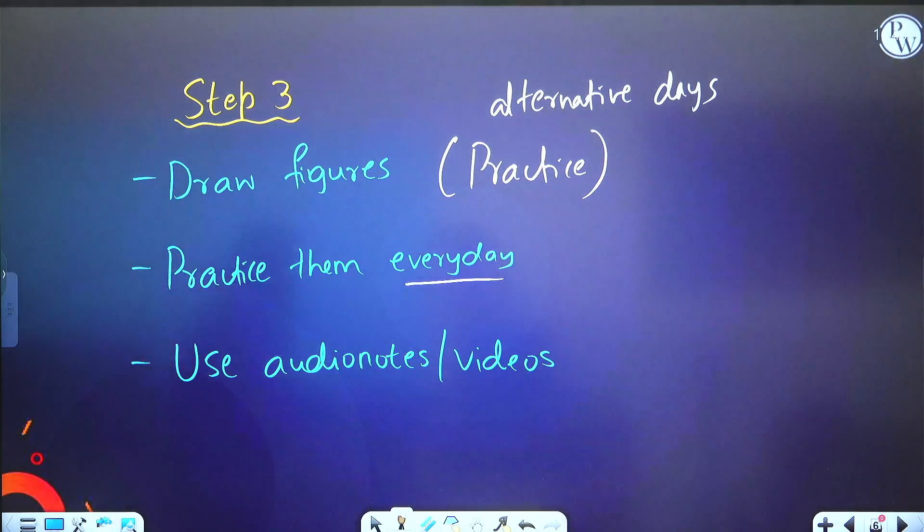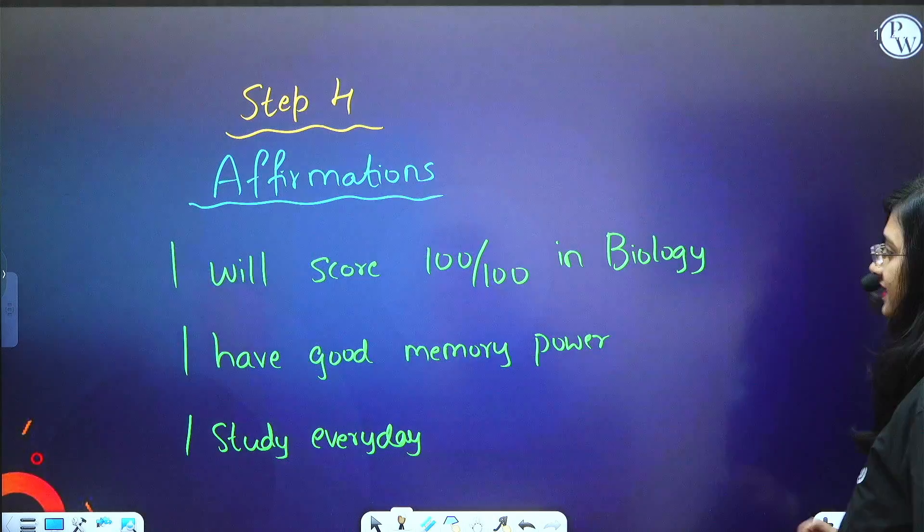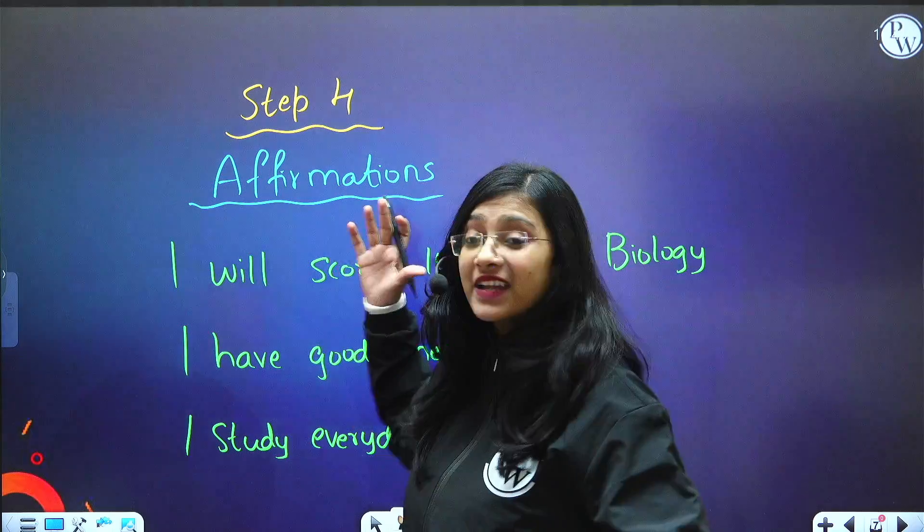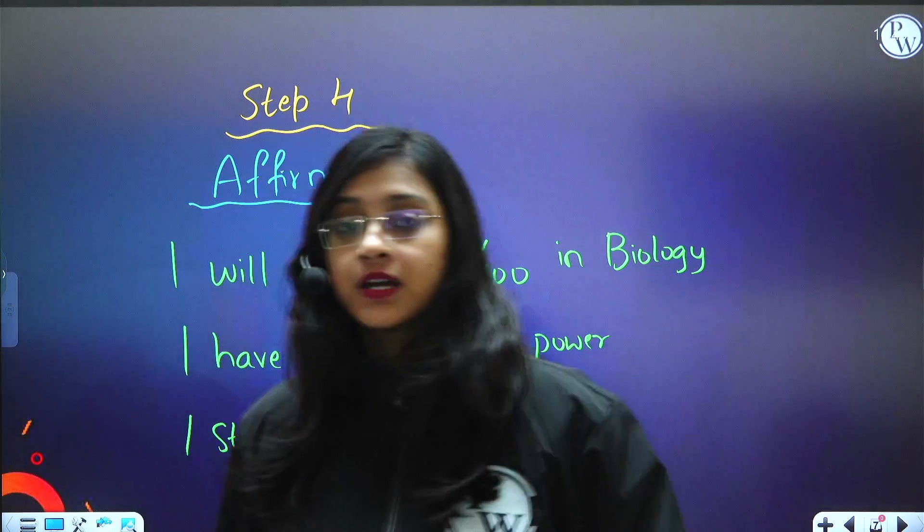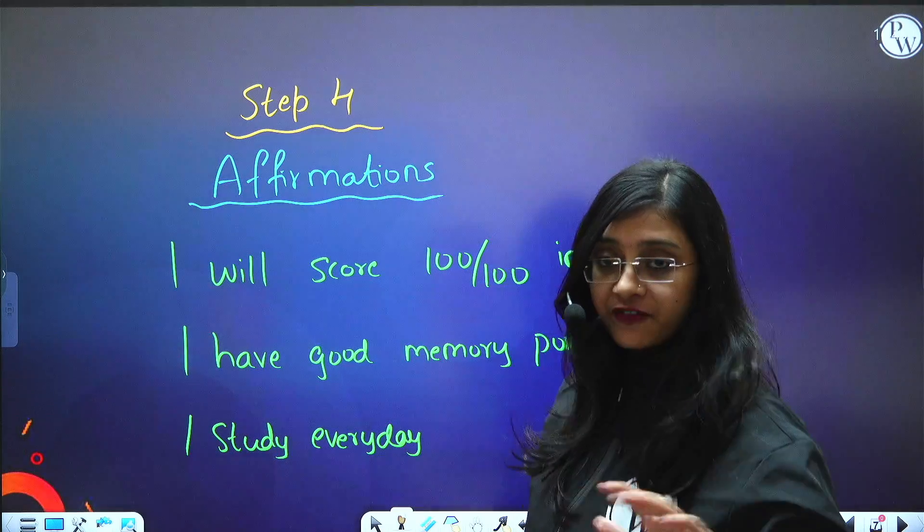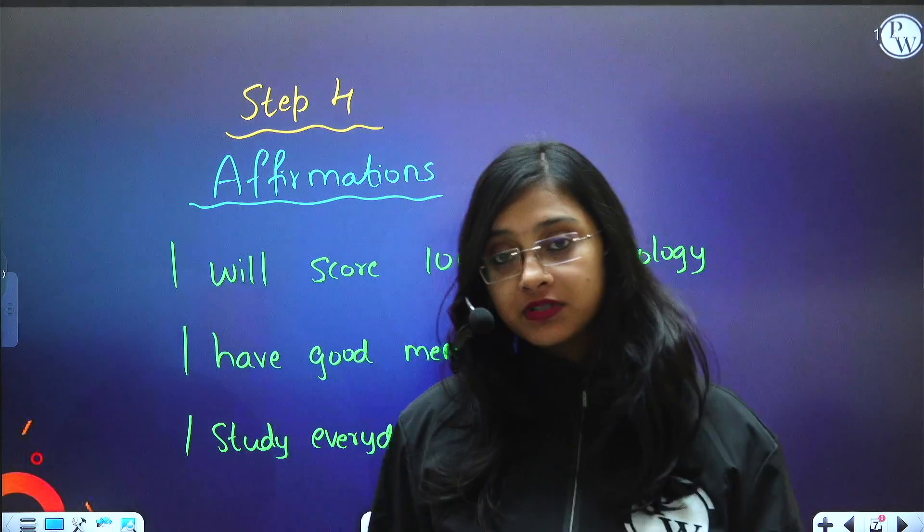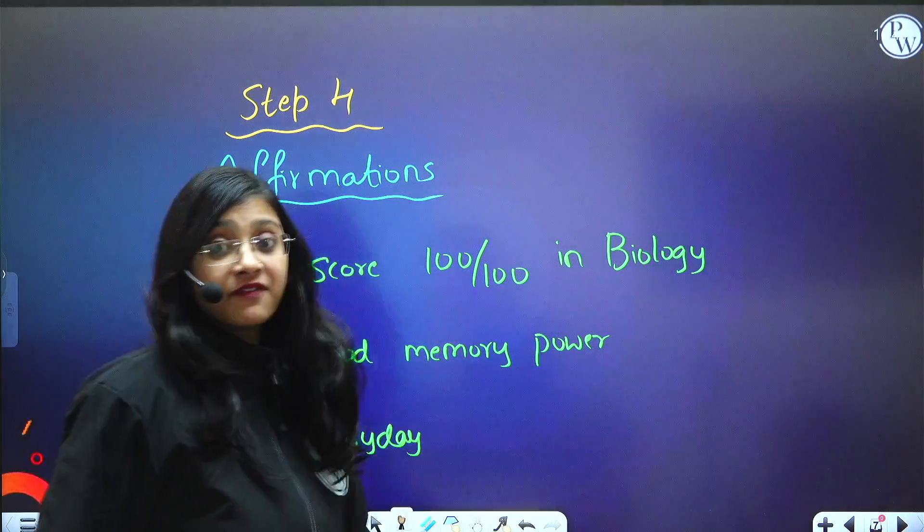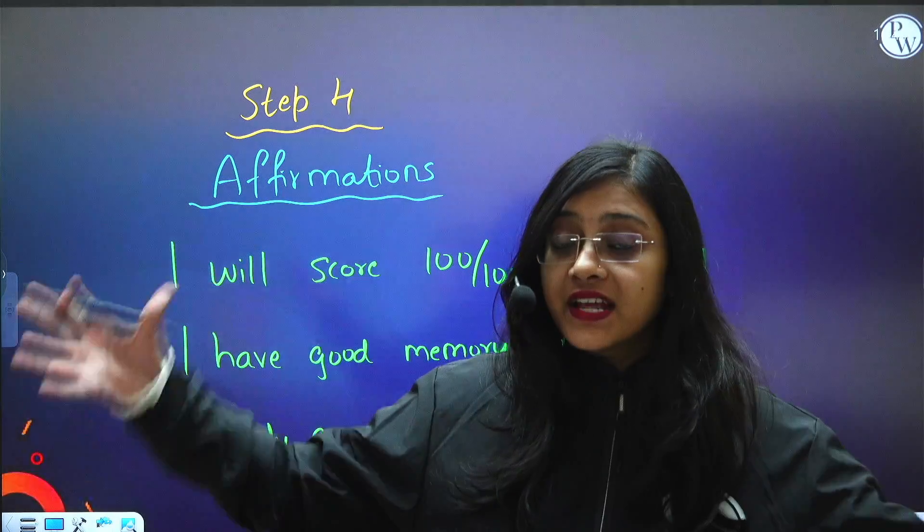The last step is a little psychological - have affirmations. If you want to score more in biology for your CBSE Class 12 boards, write certain affirmations in your notebook, on the wall, or on your table. Affirmations should be like: 'I will score 100 out of 100 in biology CBSE 12 boards,' 'I have good memory power,' 'I am confident,' 'I won't forget anything that I have studied,' 'I study every day.' Such affirmations are important - psychologically you are training yourself to study every day and score more in biology.